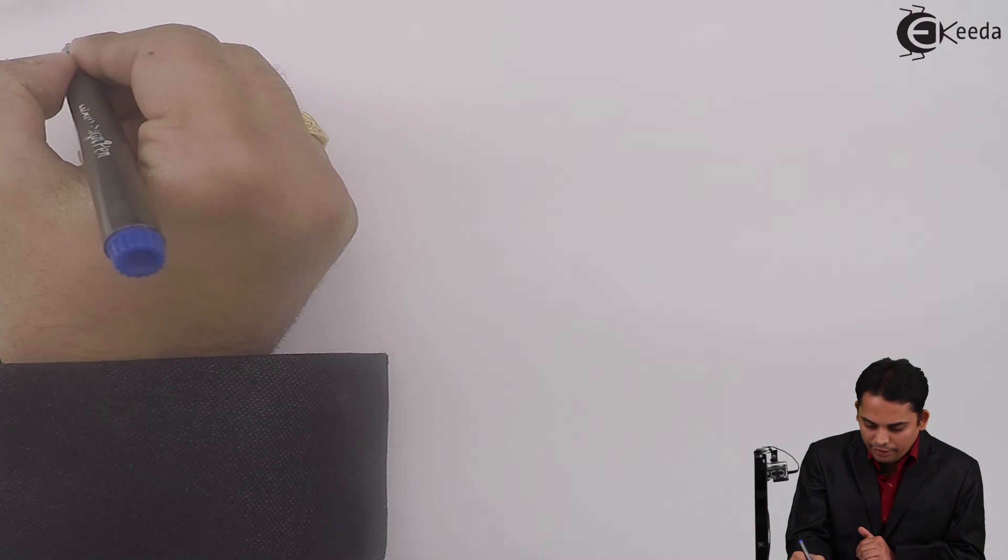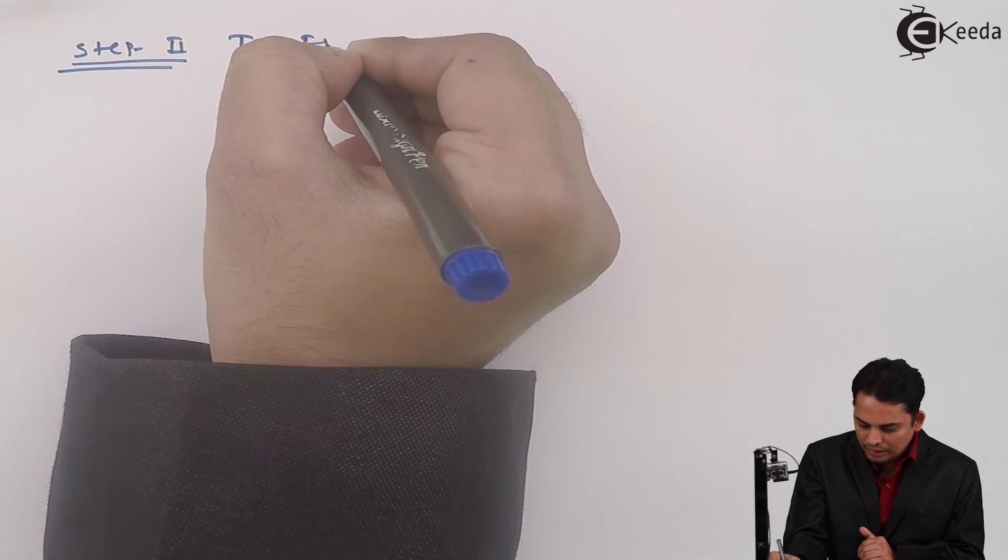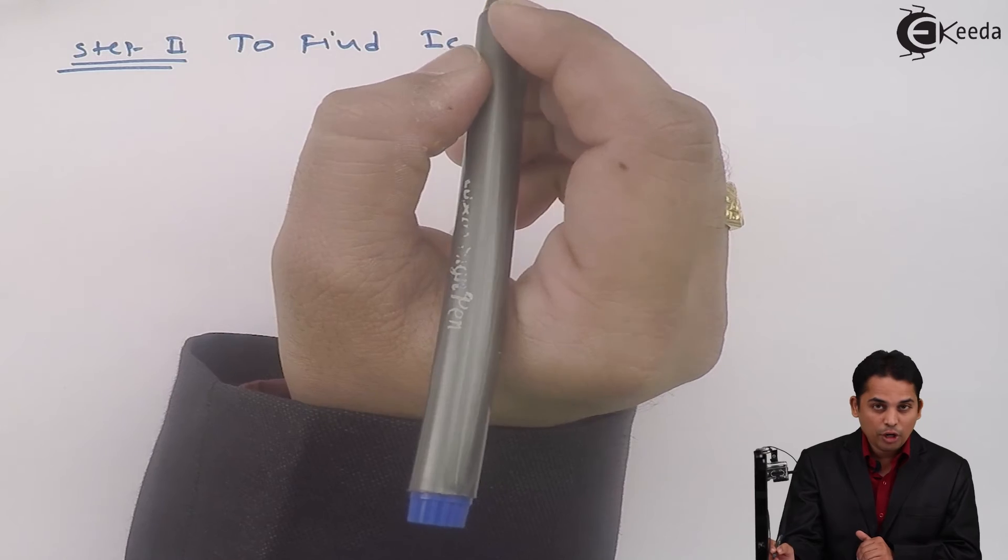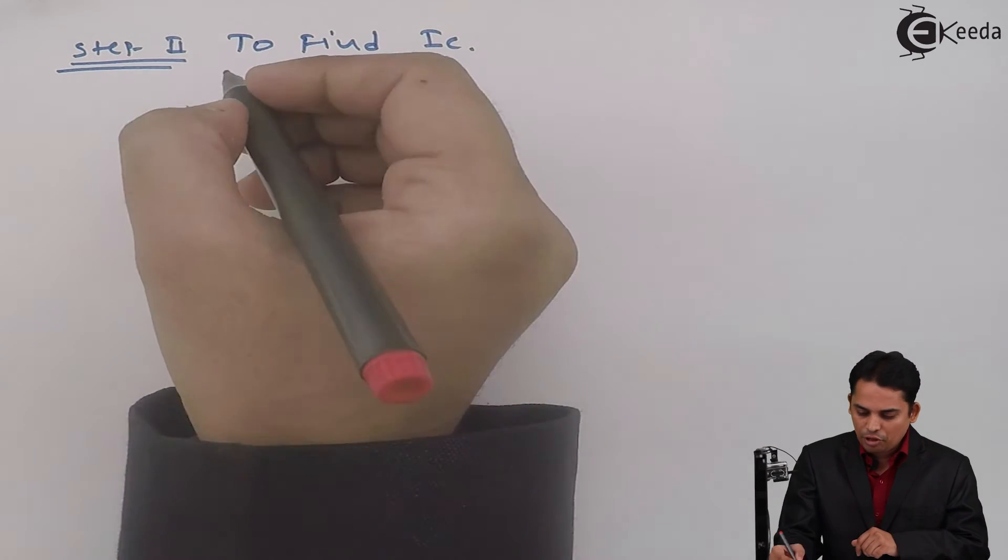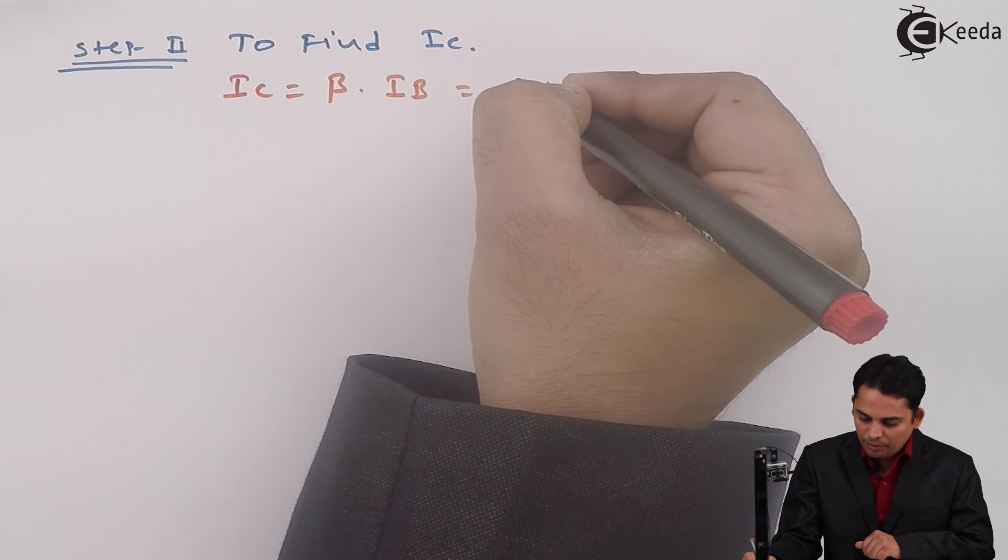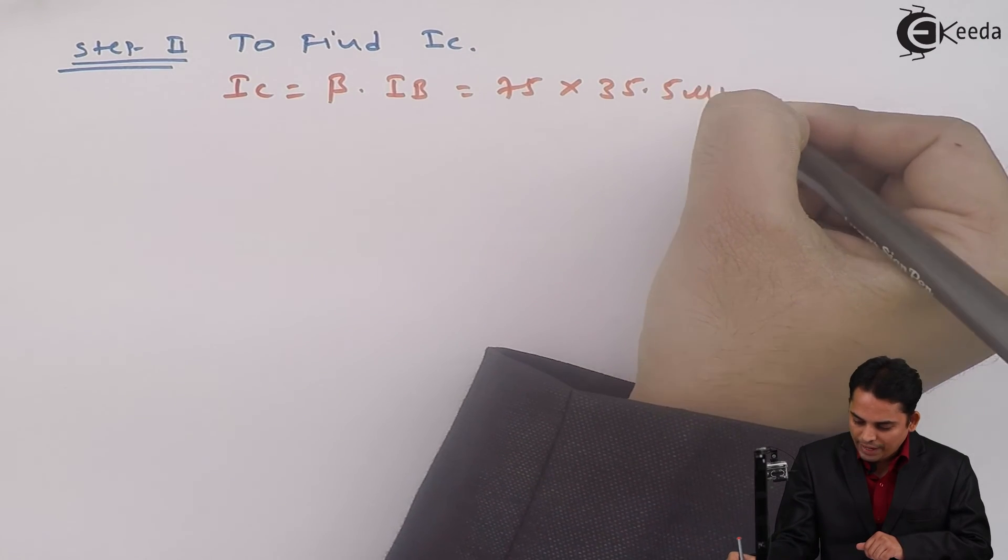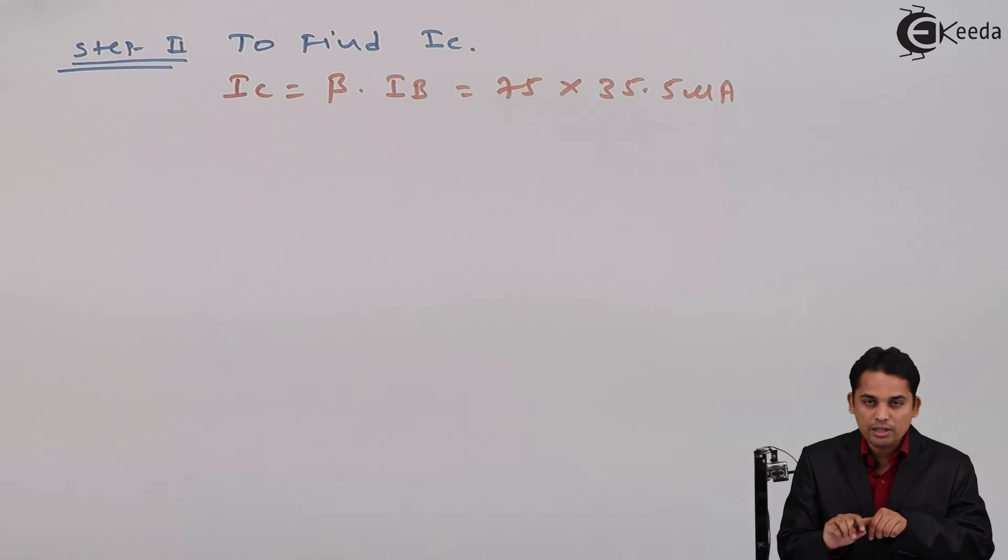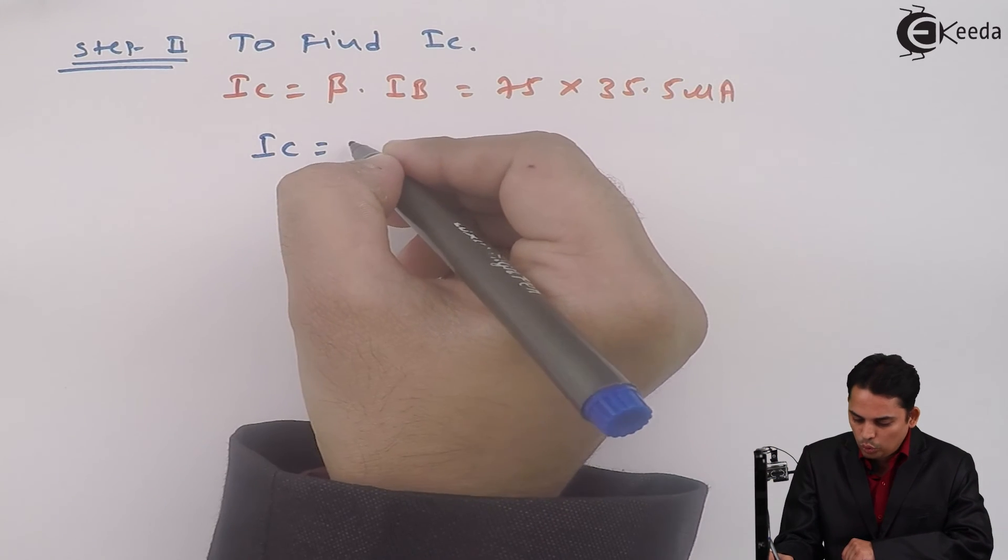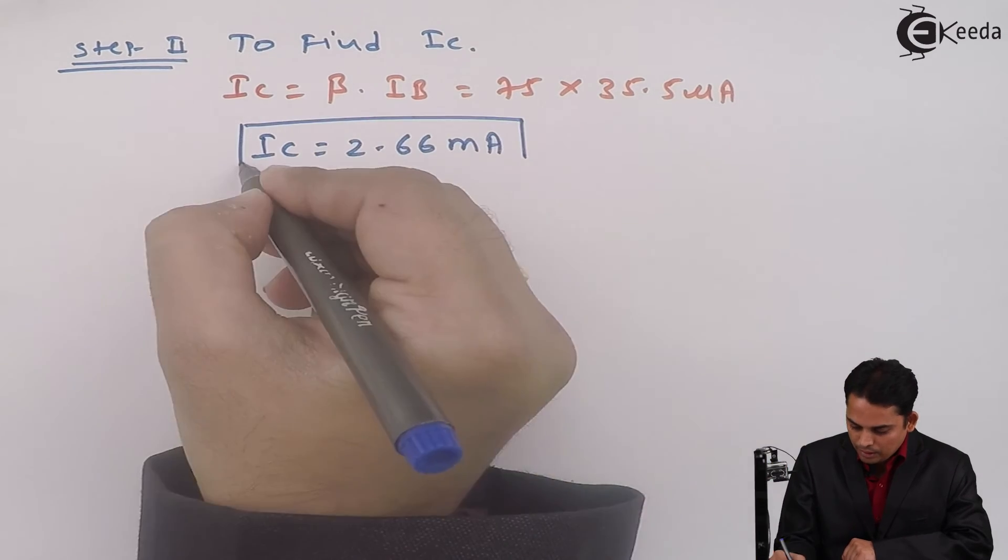So from step 2 I can find out value of collector current. Step 2 is to find IC. We know that IC is equal to beta times IB, which is nothing but 75 multiplied by 35.5 micro amperes. And hence value of IC is equal to 2.66 milli amperes.